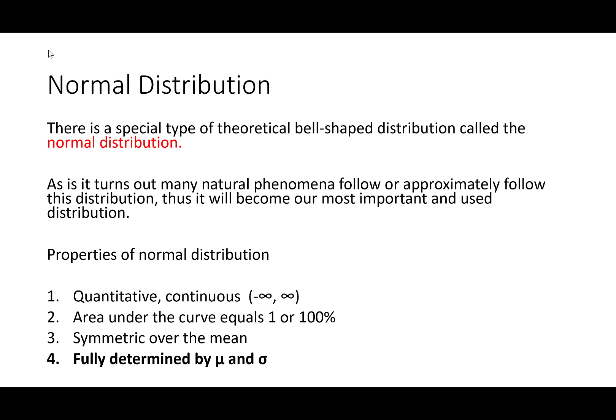Most importantly, we can figure out any probability or percentage associated with this distribution by just knowing the mean and standard deviation. Those two values will be able to uncover any percent or probability that we're interested in associated with a normally distributed data set.